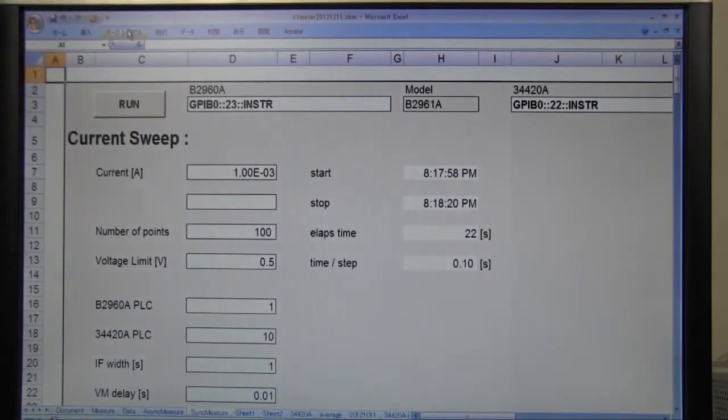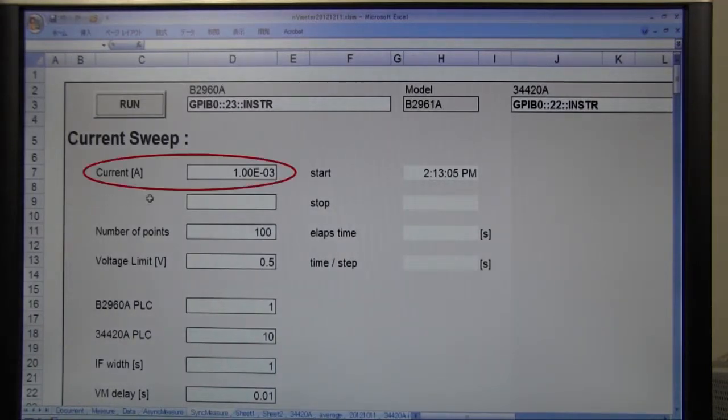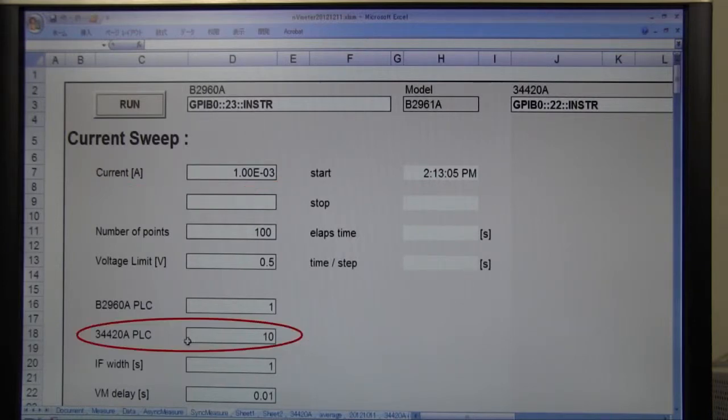You can customize the measurement settings such as force current, integration time of the voltmeter, and also other parameters. Now let's repeat the ohm measurement and plot the measured resistance value. Force current is set to 1 milliamp and the integration time is set to 10 PLC. Let's start the measurement.